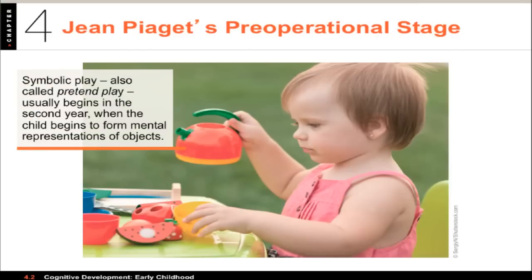The first thing we want to talk about is the work by Jean Piaget, one of the most significant people in the cognitive development of children. Piaget's pre-operational stage covers roughly ages 2 to 7, when young children's logic is under construction. Pre-operational thought is characterized by the use of symbols to represent objects — such as symbolic play — and the relationships among them, with the most important symbolic activity being language.